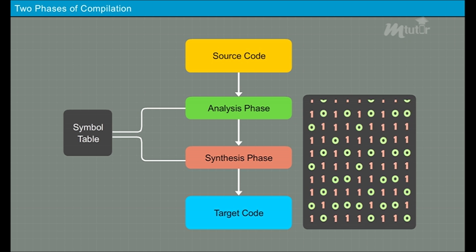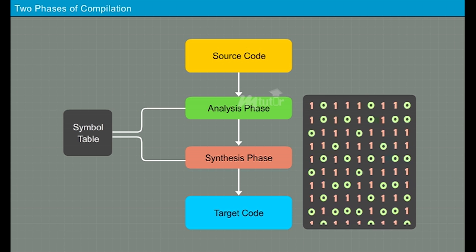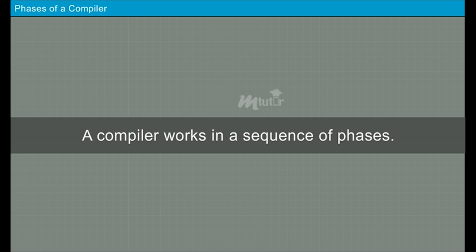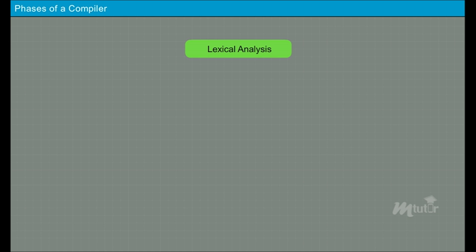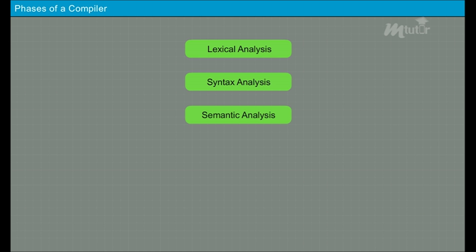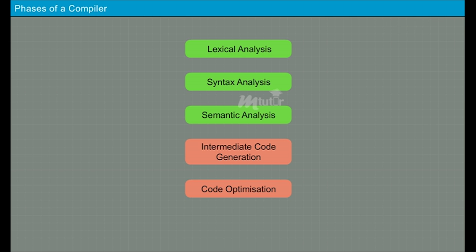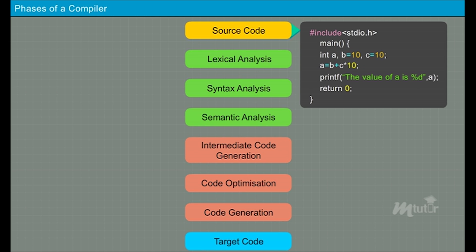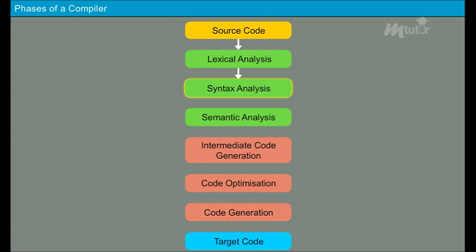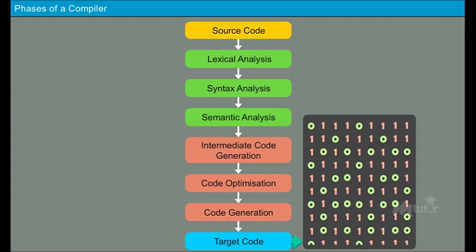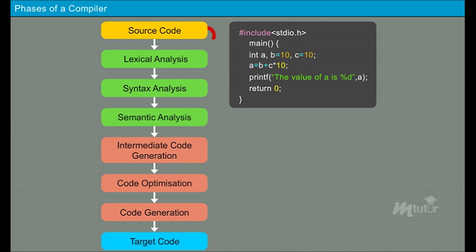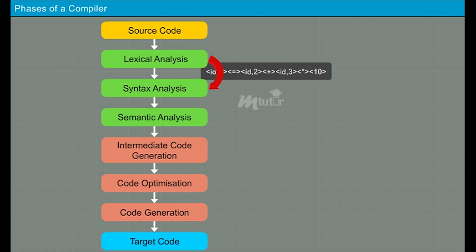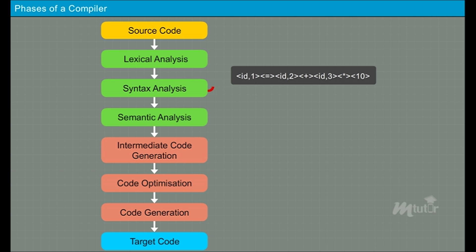Let us discuss the various phases of a compiler in detail. A compiler works in a sequence of phases: lexical analysis, syntax analysis, semantic analysis, intermediate code generation, code optimization, and code generation. The input for the first phase is the source code and the output from the last phase is the target code. Every phase takes input from its previous phase and the output will be fed to the next phase of the compiler in order.